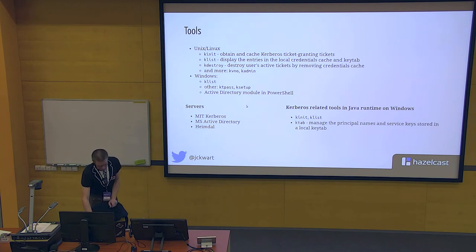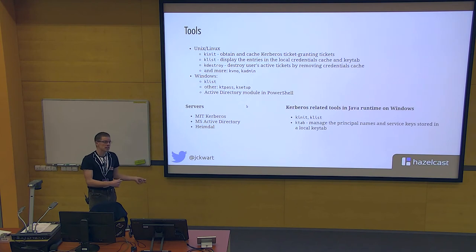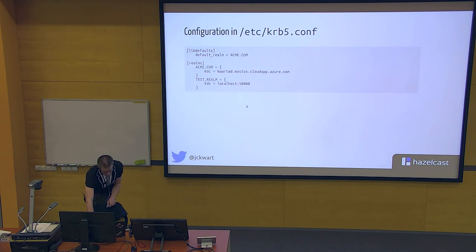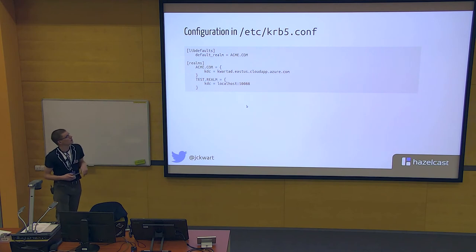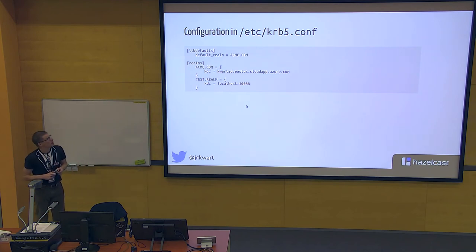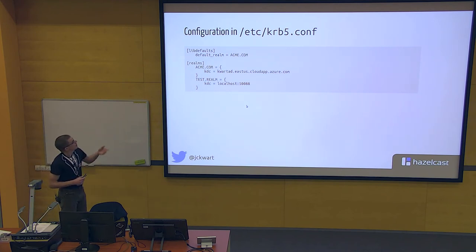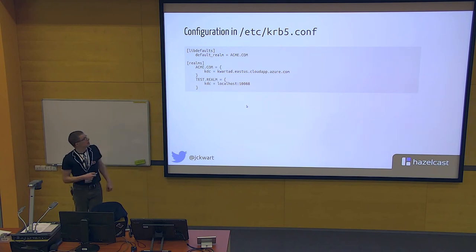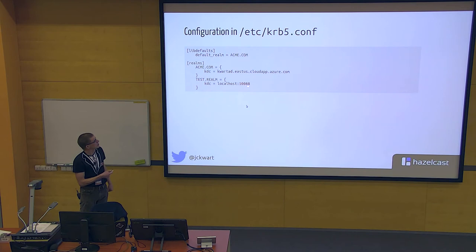The standard configuration file on Linux is /etc/krb5.conf, and the most important part is the realms section where you list your Kerberos realms and where the key distribution center lives — that's the most important information from the configuration point of view.